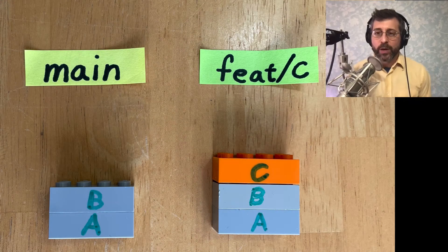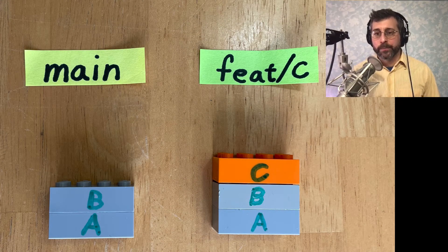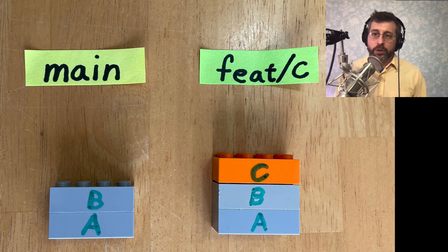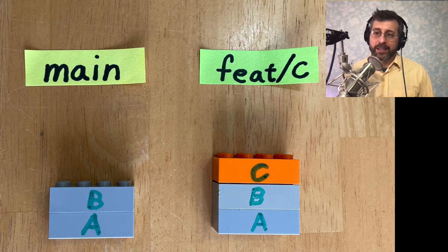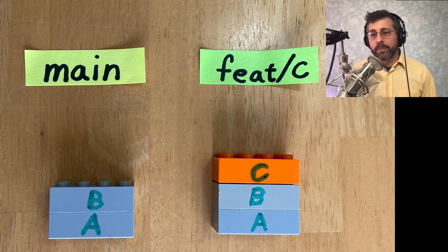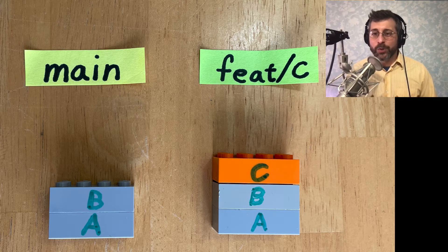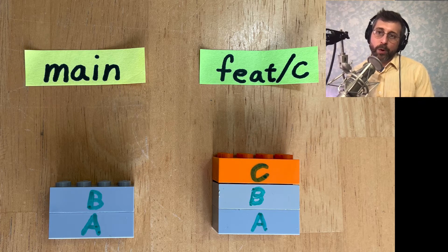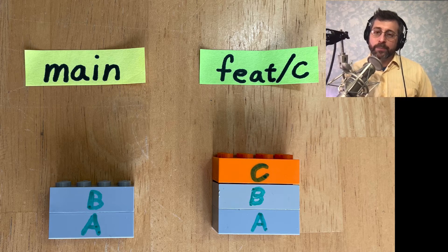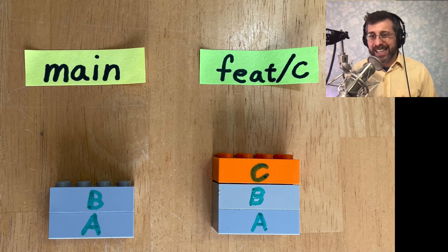So how do we know if we can do a fast forward merge? The key to doing a fast forward merge is that our receiving branch, in this case main, all of the commits in our receiving branch need to appear in the branch that we're merging in, our merge branch. So you might say it's a subset.